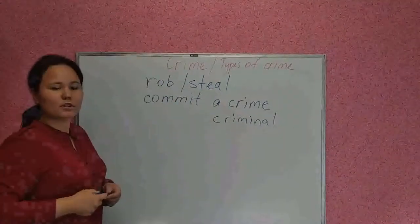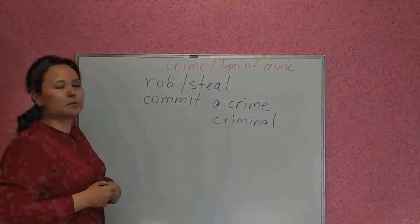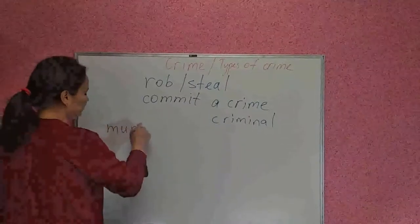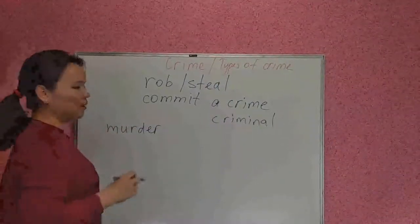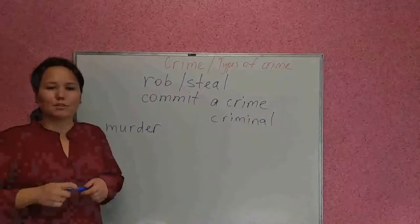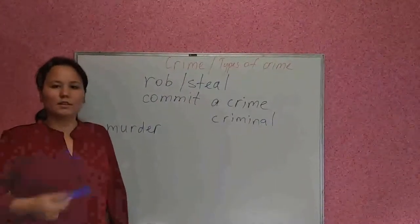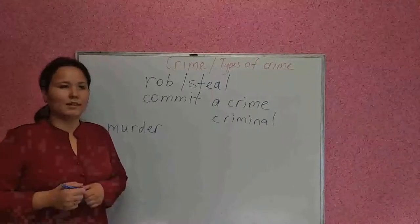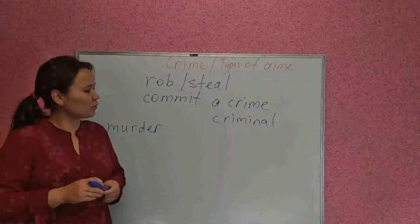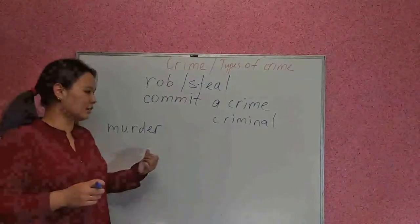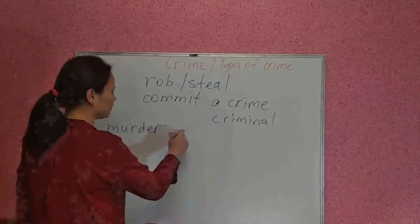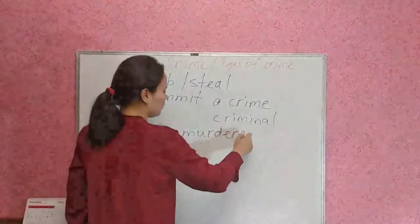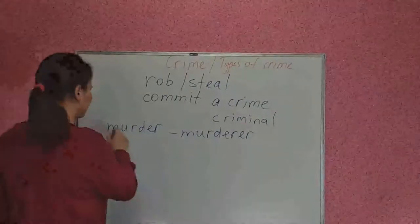The first type of crime is murder. What is murder? Murder is killing someone on purpose. And a person — a criminal — who commits this type of crime is a murderer.